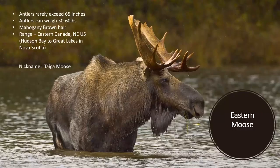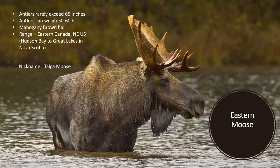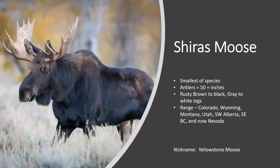Then our Eastern moose, similar in size to the Northwestern. Cows will average about 850 pounds, and a six-year-old bull is around 1,100 pounds. The largest recorded Maine bull was estimated at 1,750 pounds. Their range is Hudson Bay, Great Lakes, Nova Scotia, Quebec, Newfoundland, Ontario, and Canada, and in the U.S. as well. Population is about 290,000.